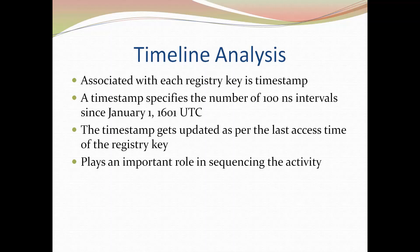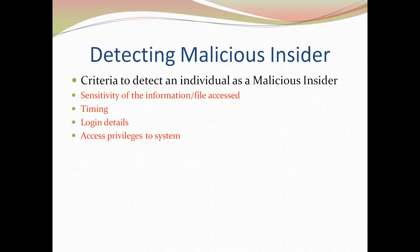For example: at a particular time a login activity was performed, then an application was installed, then the network was accessed, then a document was accessed. The time for all these activities can be obtained from the registry key timestamps. We can correlate this sequence of events on the system, which is important for the forensic investigator to understand the timing of activity.